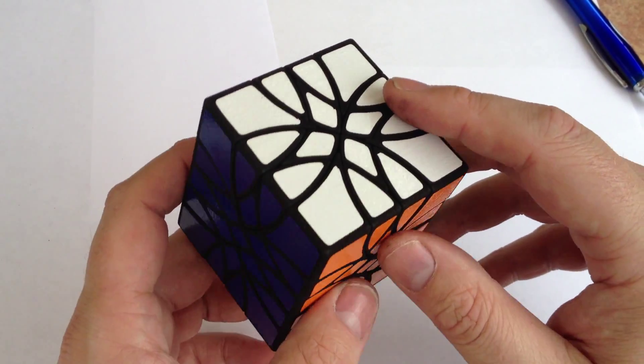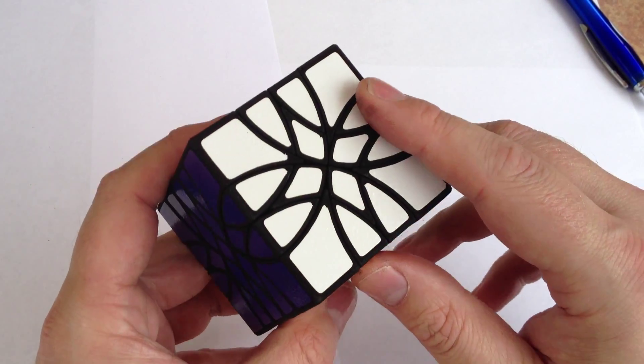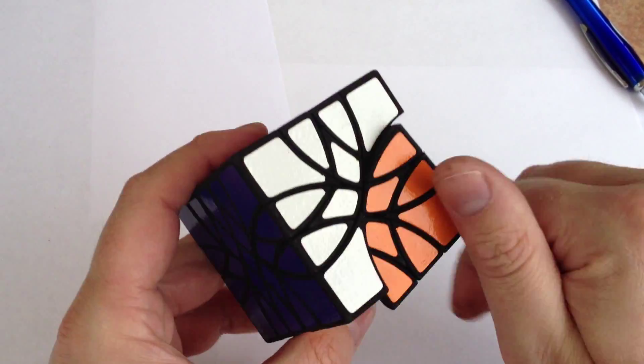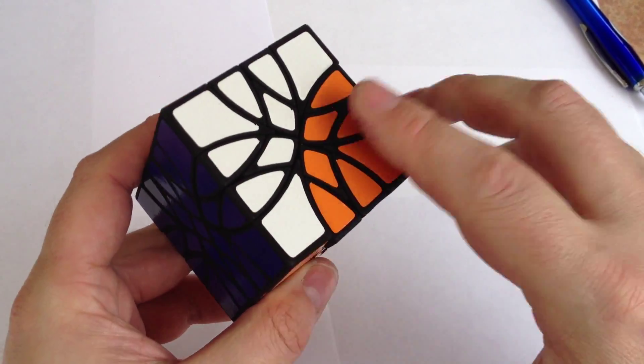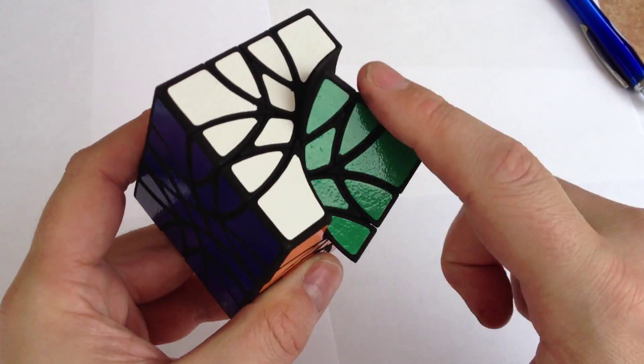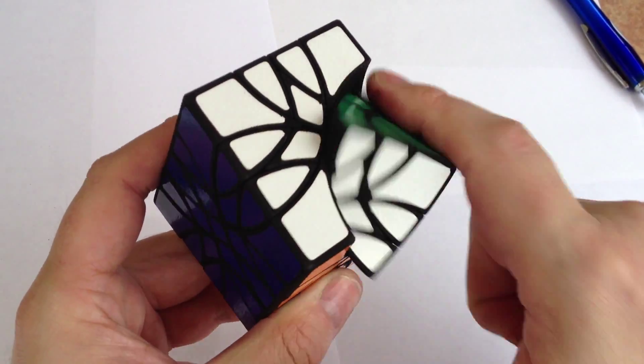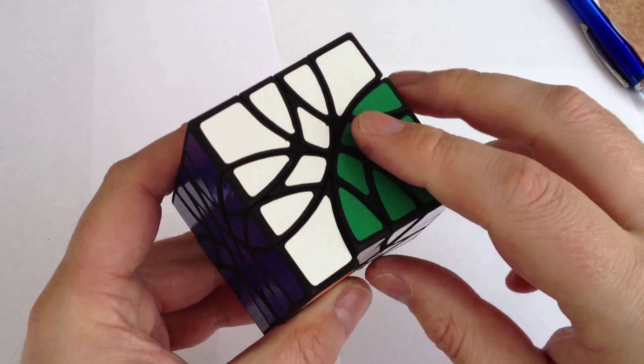But this is the Bubboloid 122 puzzle. Turning is excellent on this puzzle. You can actually turn it with a single finger. So there you see what the turning looks like.